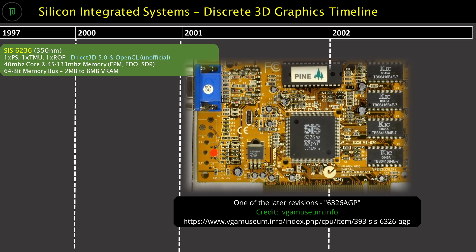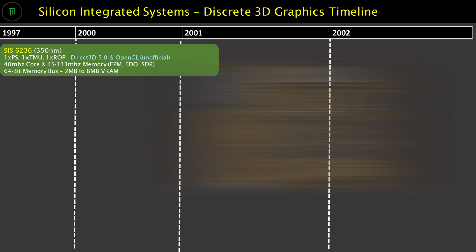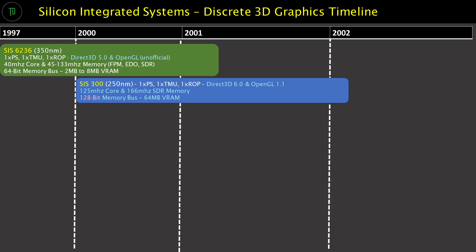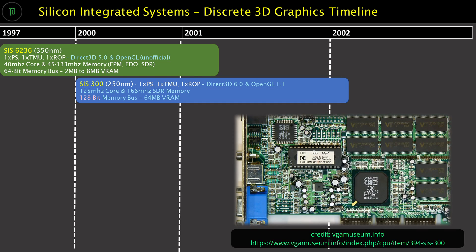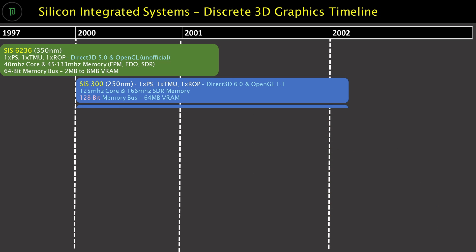It released the 6326 series as its first 2D/3D graphics chipset and made numerous revisions to it over a lengthy 3-4 year lifecycle. Around the year 2000 SIS would develop the 300 series, which was seen by many as the first real attempt at 3D by SIS, as the previous 6326 struggled with anything 3D gaming related.